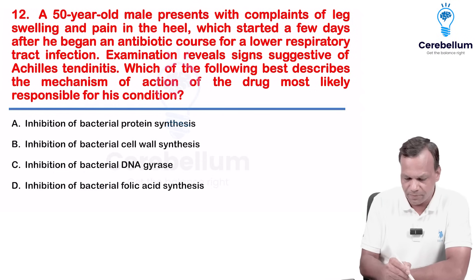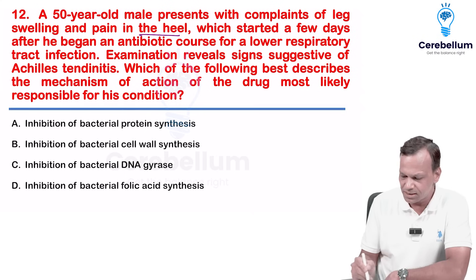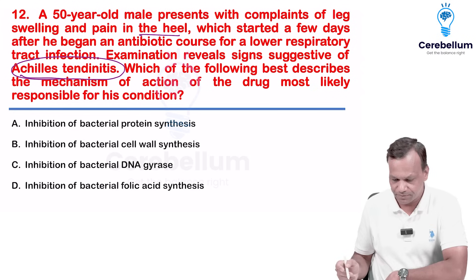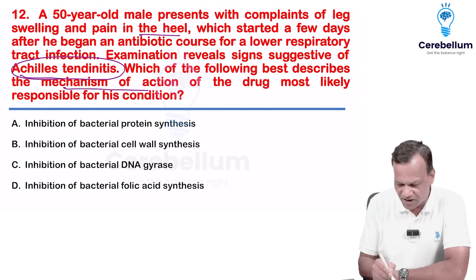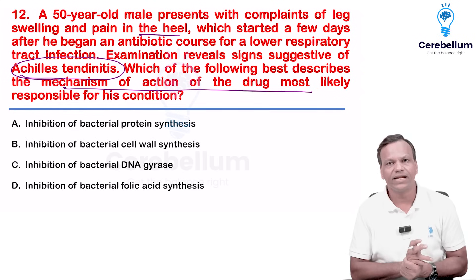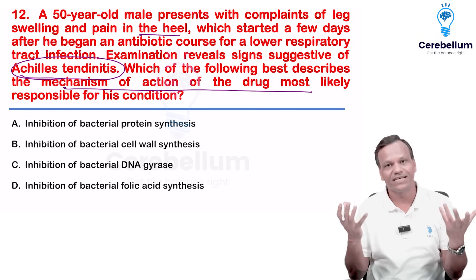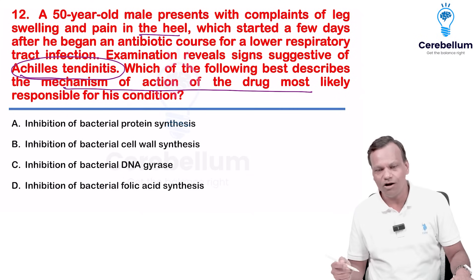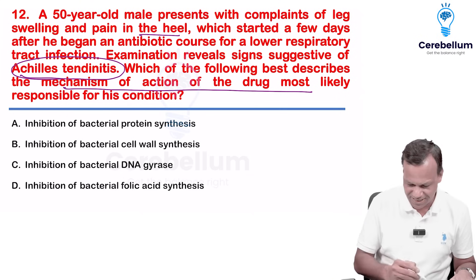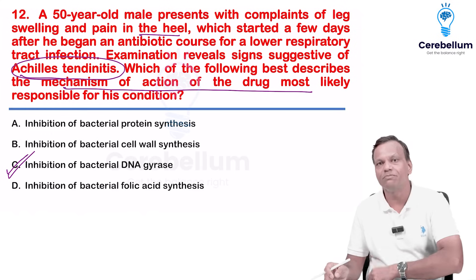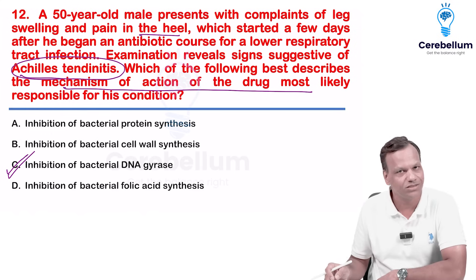A 50-year-old male presents with leg swelling and pain in the heel — Achilles tendinitis. Which antibiotic can cause tendinitis? The answer is fluoroquinolones. The mechanism of action of fluoroquinolones is inhibition of DNA gyrase. So they are asking the mechanism of fluoroquinolones.